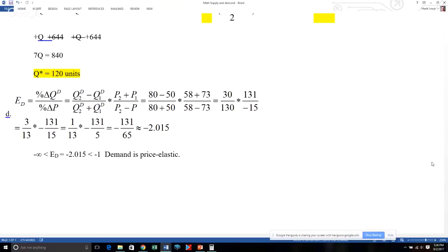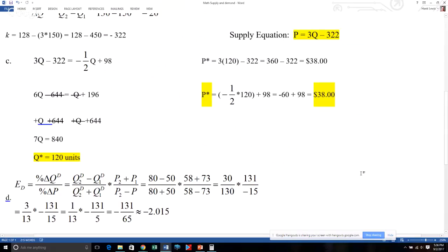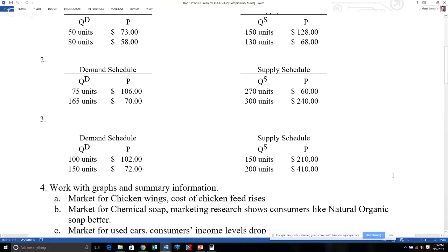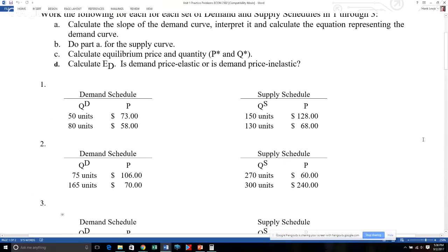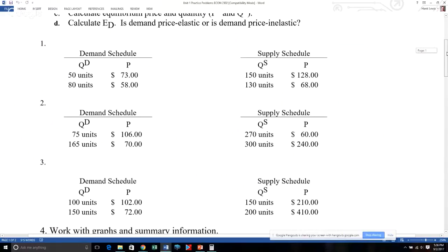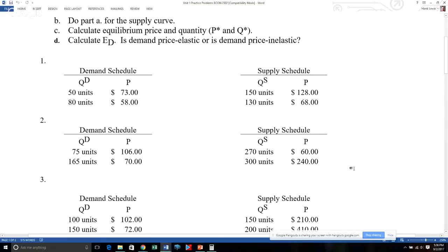This is the same methodology that you all would be using to solve the other practice problems for unit one as well as for problem number two in the handwritten homework. Now I want everybody to notice I've given you all two more practice problems that involve calculating slopes of demand, interpreting, calculating equations that represent demand and supply, calculating equilibrium price and quantity, and calculating E sub D. It is highly recommended that students work all three of them. They're not for credit, but this is for the sake of learning because problem two on the handwritten homework is for credit.